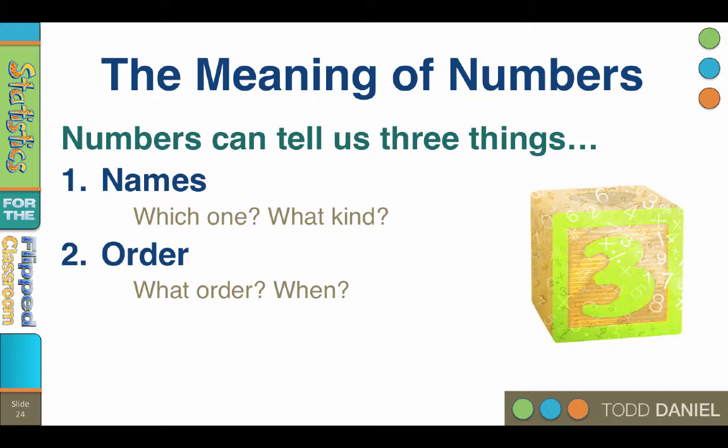Order — numbers can tell us what order. How did you finish the race? You came in number three. Numbers can tell us when. How long before we are seated? We are fifth on the maitre d's list. These ordering numbers are also used with descriptive statistics.